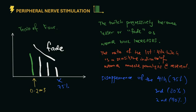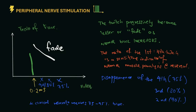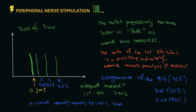If you see here, disappearance of the fourth will signify 75% blockade, the third 80% blockade, and the second will signify 90% neuromuscular blockade. It is helpful for us to note that clinical relaxation requires about 75 to 95% blockade. How about adequate reversal then? By measuring the first to fourth twitch ratio, a ratio of more than 90% will show that the patient can be safely extubated.